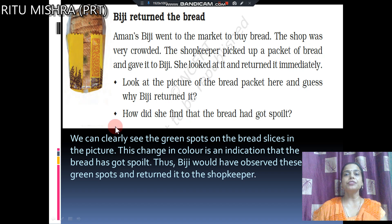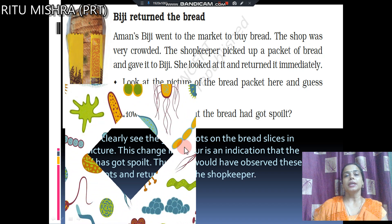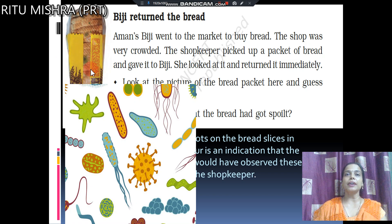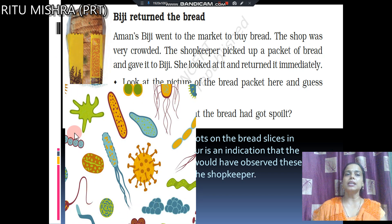Now, next — how does she find the bread had got spoiled? What is the reason behind this spoiled bread? The reason behind it is microorganisms — different kinds of microorganisms that travel in the air.